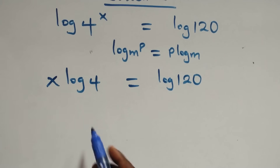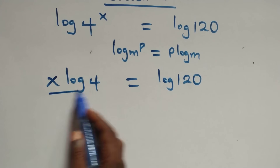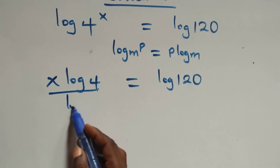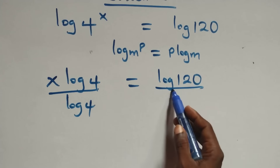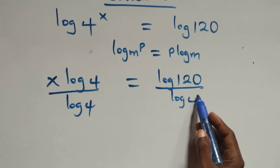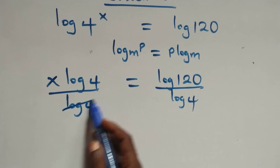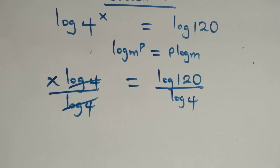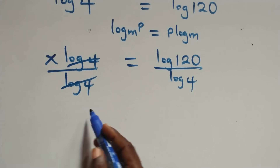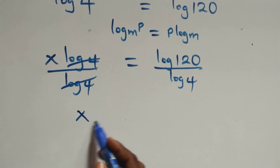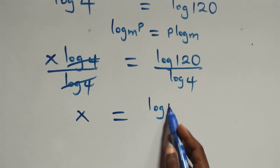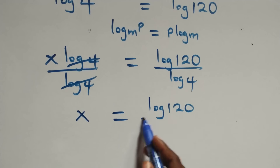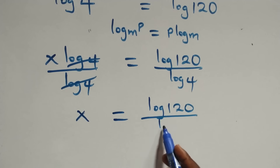Next step: divide both sides by log 4. On this side, divide by log 4; also divide the other side by log 4. The log 4 cancels, and we have x equals log 120 over log 4.